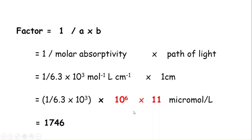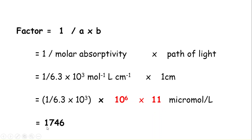We perform the conversion from moles to micromoles because enzyme activity is reported in international units, and one international unit is defined as the conversion of one micromole of substrate to product per minute — so the unit must be in micromoles. We also multiply by 11 to adjust for the dilution factor of 11 discussed earlier. After simplifying all of this, we get 1746. This 1746 is the factor.